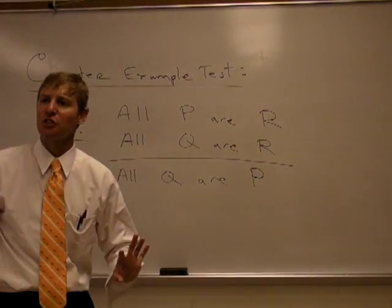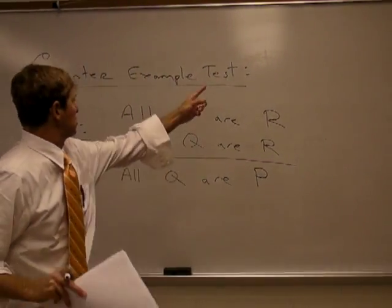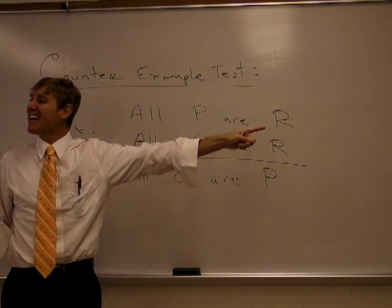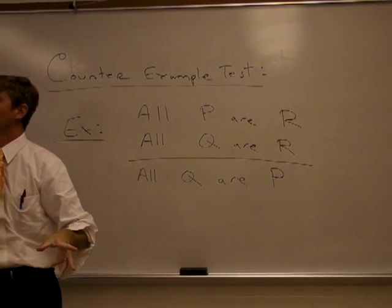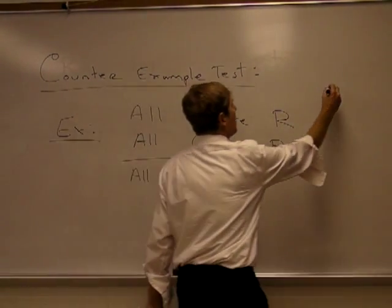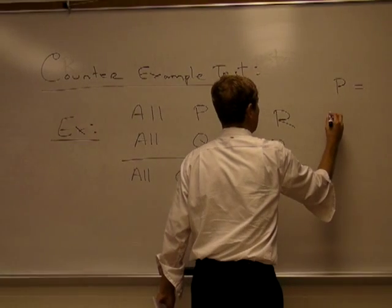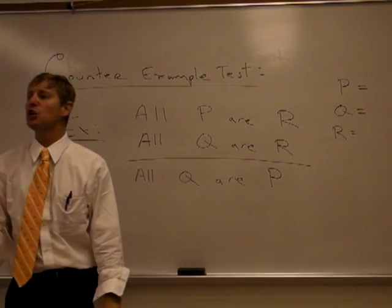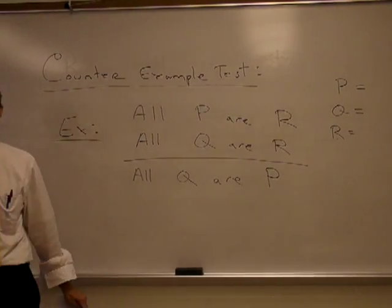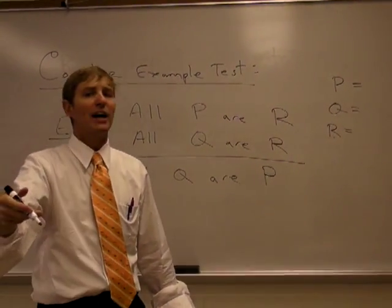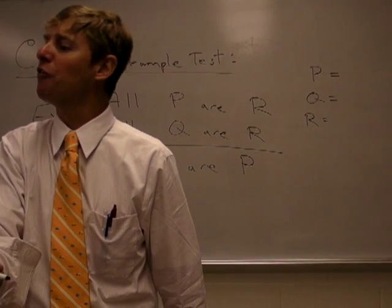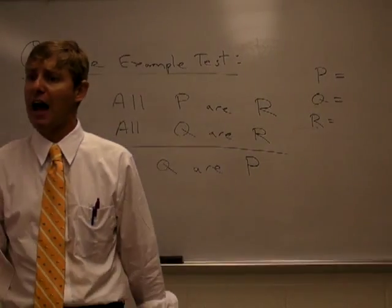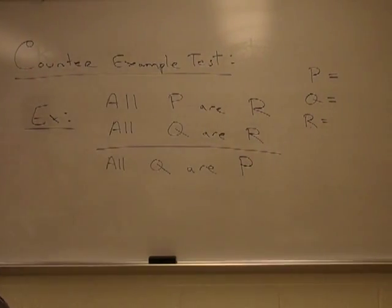Well folks, you already know that this one's invalid because we have an undistributed middle term here. But for sake of demonstrating this test, what we do is we plug in content for P, Q, and R that make our premises true, and then we look at our conclusion. If it spits out a false conclusion, we know that the syllogism is invalid.